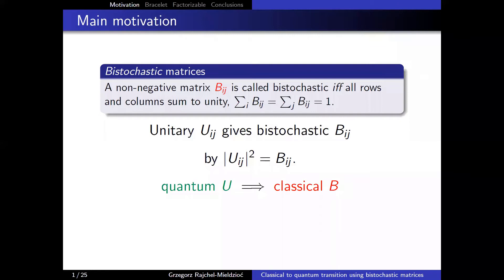How does this relate to the quantum world? In the quantum domain, we are usually interested in unitary matrices. Every unitary matrix defines a bistochastic matrix by a simple relation: we take the absolute value of each element and then square it. So the quantum domain maps to the classical one.